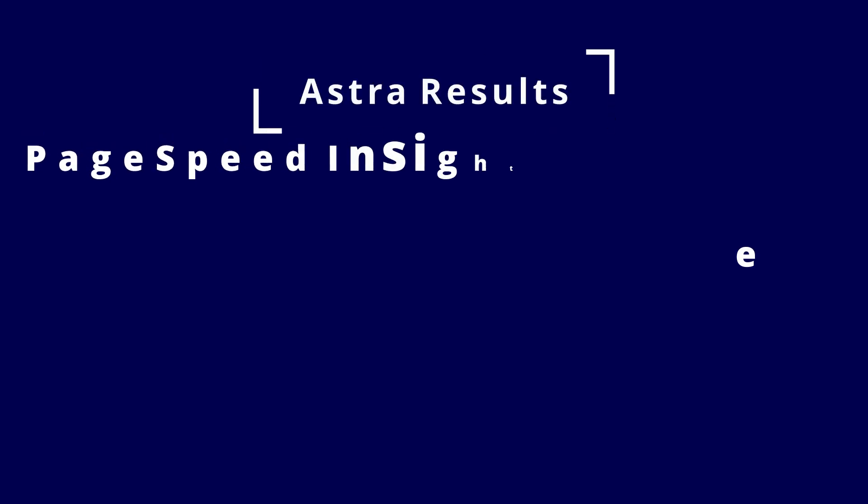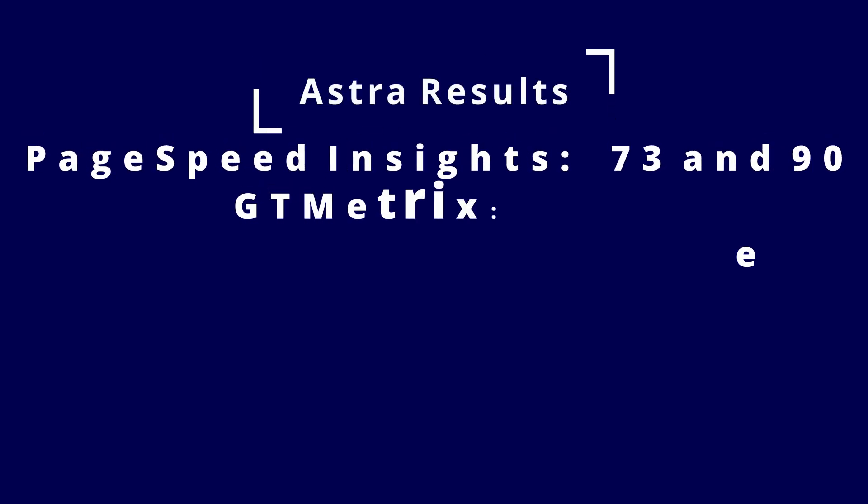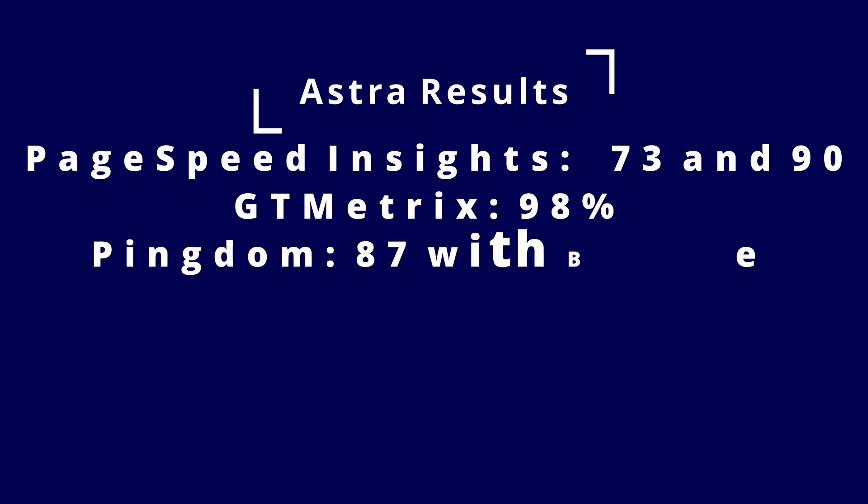Here are the results. Astra scored 73 and 90 on Google PageSpeed Insights for mobile and desktop respectively. On GTmetrix, Astra scored 98% for performance and 98% for structure. On Pingdom, Astra scored 87 with a B grade, a total page size of 492 kilobytes, a load time of 916 milliseconds, and 18 requests.